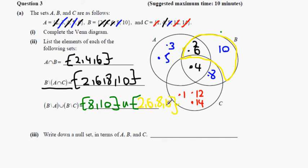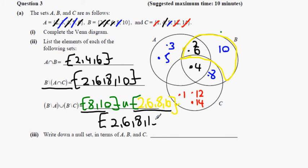The union of those two sets means everything in both sets listed once, which is going to be 2, 6, 8 and 10.